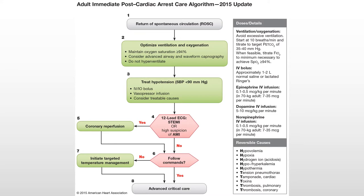We want to give IV fluids to prevent or treat hypotension. If their systolic blood pressure is less than 90, they're going to get IV fluid. And we're going to try and treat the cause — was it hypovolemia, do they need blood transfusions, is there a potassium issue? These are the treatable Hs and Ts.